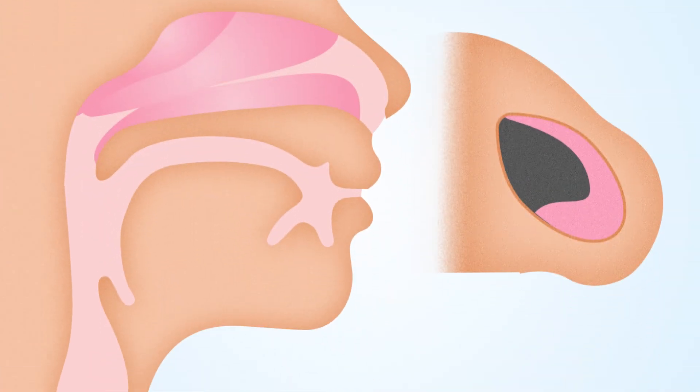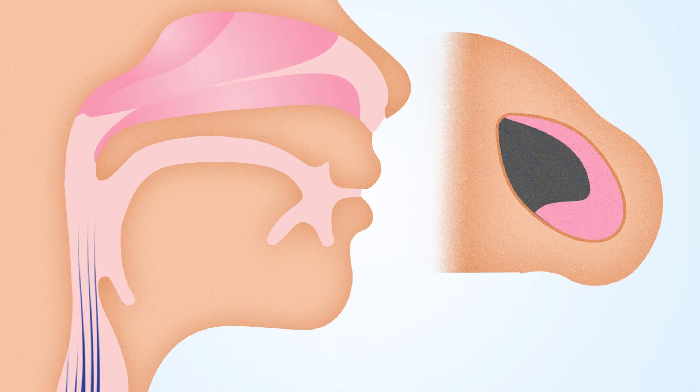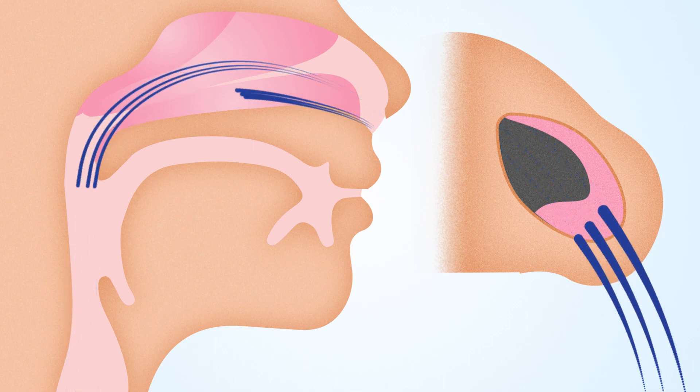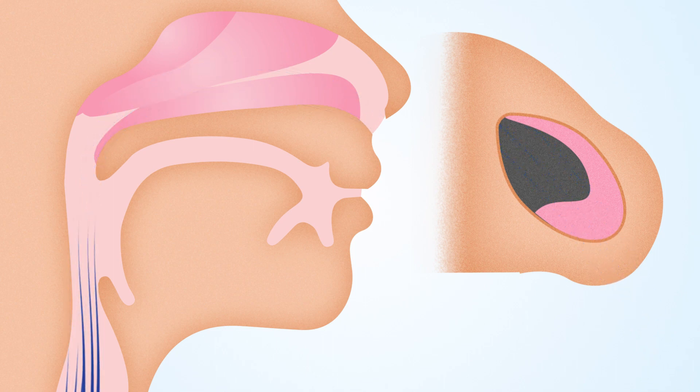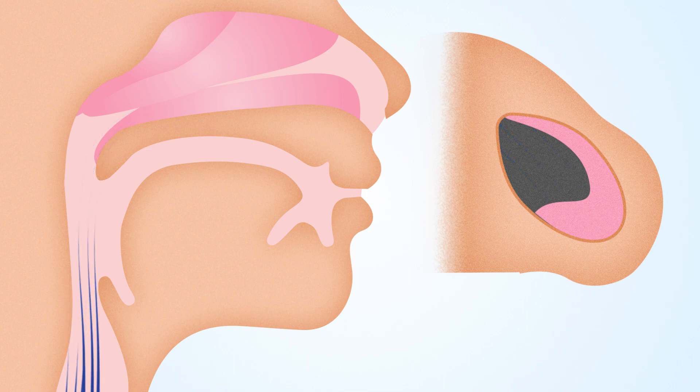When a patient is sleeping, the air moves in and out slowly past the hanging soft palate and uvula and through the vocal cords.